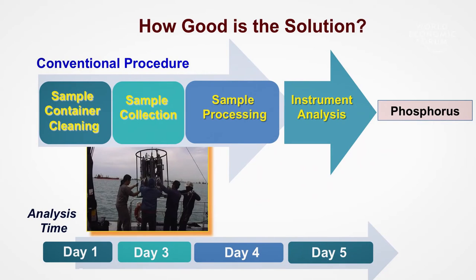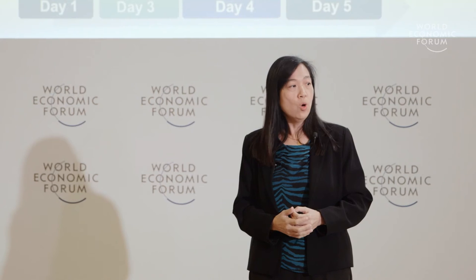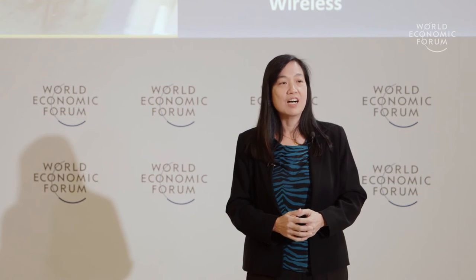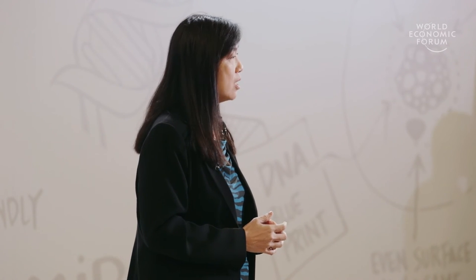In grab sampling, it takes about two days to thoroughly clean and prepare the bottles for sampling. It takes another one to three days to bring the samples back to the lab and process them for measurement. All in all, it takes about four to five days to get a result. But with our in-situ monitoring system, there is now no need for all of that. Our device is sensitive, real-time, and automated. Because it uses LED lights, its parts are cheap and the power requirements are low.